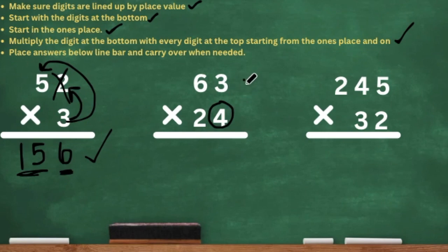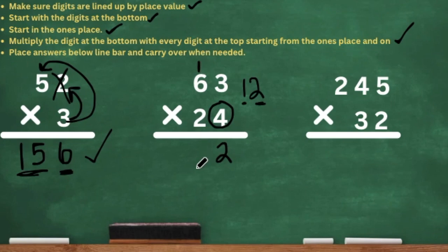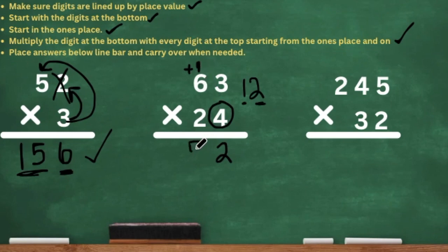Four times 3 is 12. So we're going to take that 2 — because it's in the ones place — and place it underneath the line bar in the ones place. Then we're going to take that 1 and carry it over to the tens place. So now we have to ask ourselves, what is 4 times 6? And remember that 1 that we carried over at the top — we have to add that to our final answer. So 4 times 6 is 24, and we add that 1, and that's how we get 25.